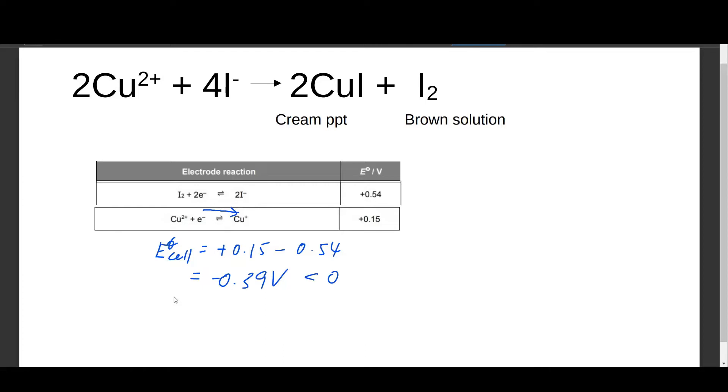In actual fact, this reaction is spontaneous. Why is it spontaneous although E naught cell is less than zero? Well, that is because it is occurring at non-standard conditions, and the main culprit is actually due to the precipitation of the CuI precipitate.